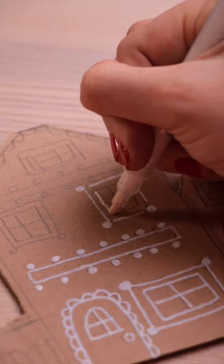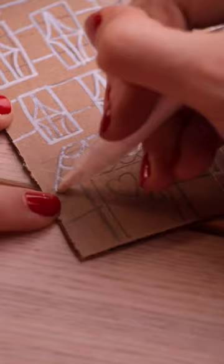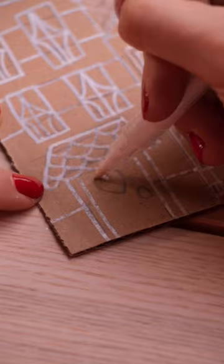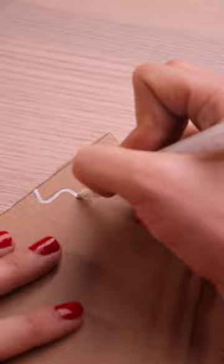If this project looks complicated, I promise it isn't. All we're doing is drawing shapes and lines. You can do this! Next, trace in your mountains. For the parts covered in snow, I'm coloring them in completely.